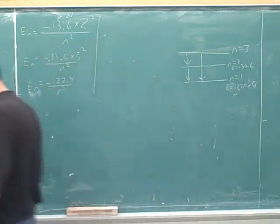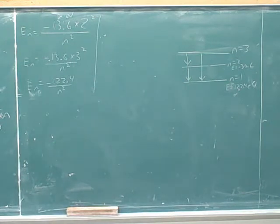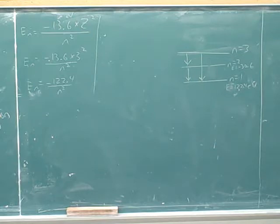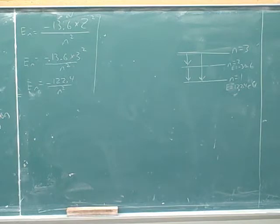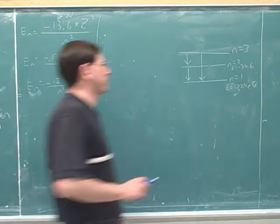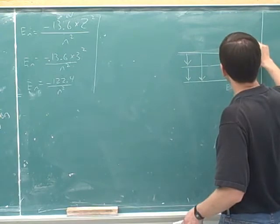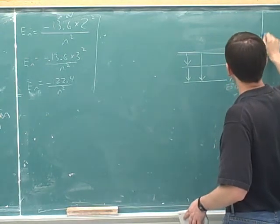So you said the energy level values — negative 1.22, negative 3.4, negative 13.6 — those are the ground state energies for hydrogen, and they're all in electron volts.